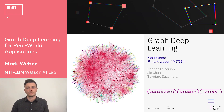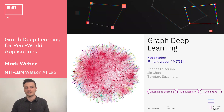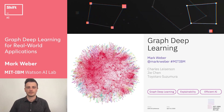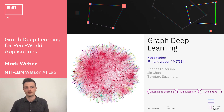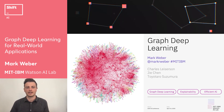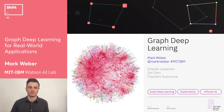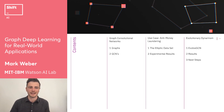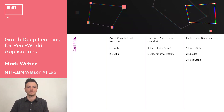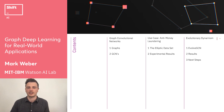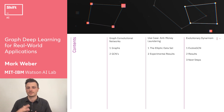Today, I'll be sharing our work on graph deep learning, which is led by my colleagues Charles Leiderson at MIT, Jia Chen and Toyotaro Suzumara from IBM research. This is a line of work focused on accelerated and explainable graph deep learning for real world applications. We have a lot to cover today, so I'll jump right into it. We're going to look at graph convolutional networks as a model architecture, a use case in anti-money laundering, and then our most recent work dealing with evolutionary dynamism — graphs that are always changing.